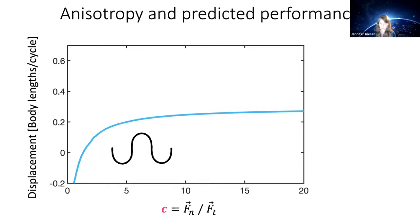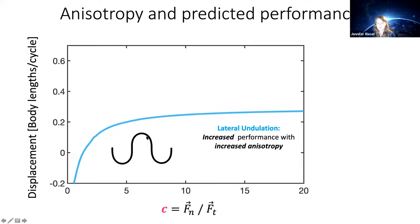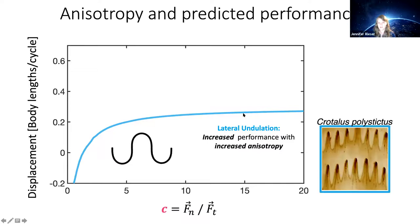Running our model for lateral undulation — where all segments of the body are on the ground at every moment — we look at displacement over a single cycle as a function of this anisotropy coefficient. We find that as you increase anisotropy, making normal forces more important than tangential forces, performance in lateral undulation improves. We hypothesize that's the effect of head-to-tail spikes on most animals.